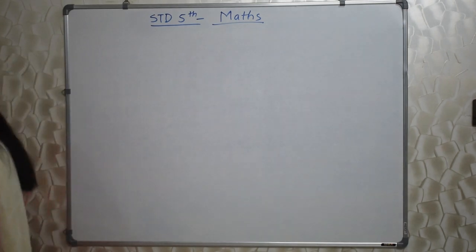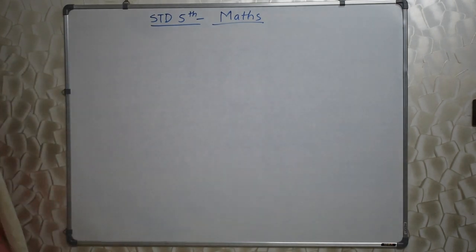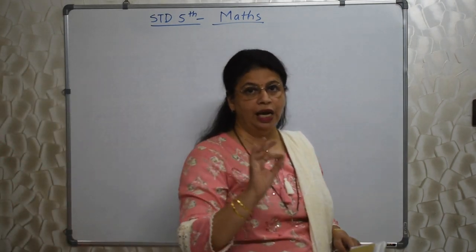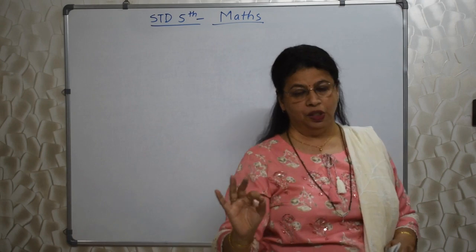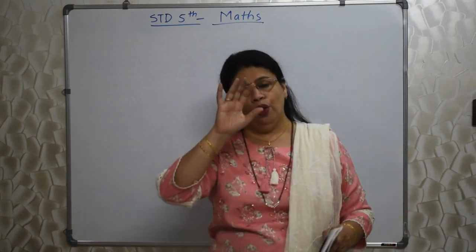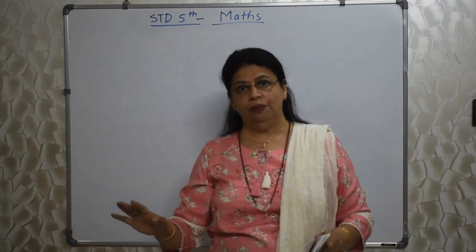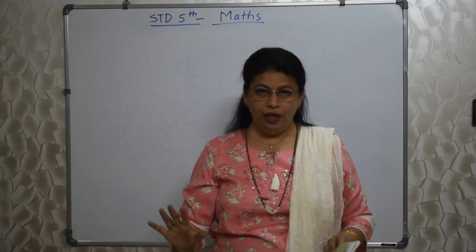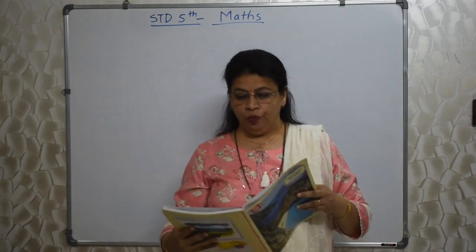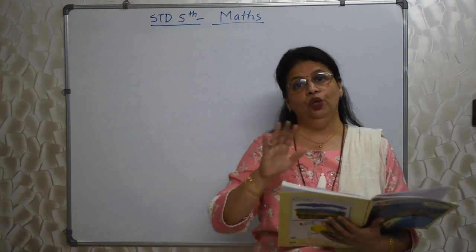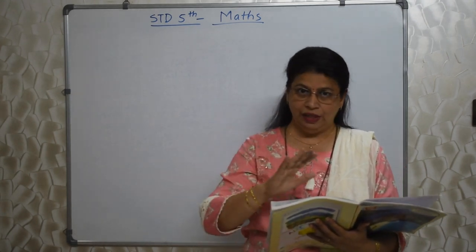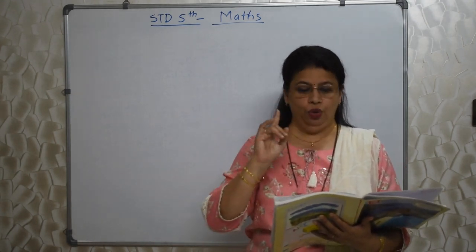First thing is international, Roman, and Devanagari numbers — types of numbers. Very easy. For all topics my videos are there, so if you feel, you can see them. You should know how to convert international numerals into Devanagari or Roman and vice versa.